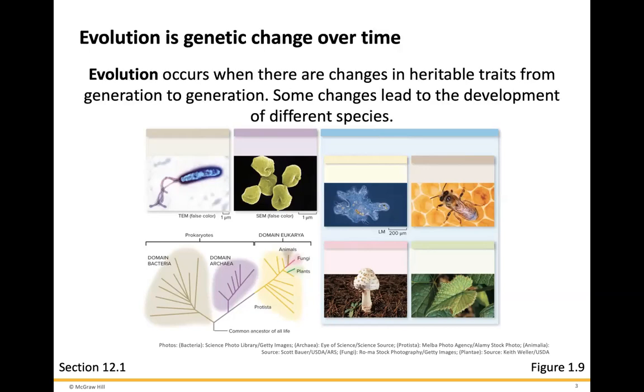Evolution occurs when there are changes in heritable traits from generation to generation. In one of the previous chapters, you learned about DNA. And it's changes within those genes and DNA that leads to, ultimately, evolutionary changes. Now, some of these changes can lead to the development of different species as well.